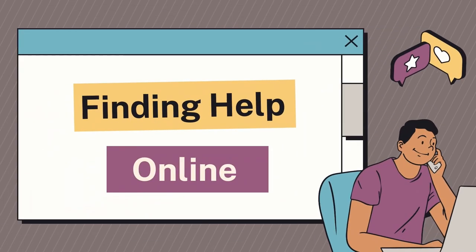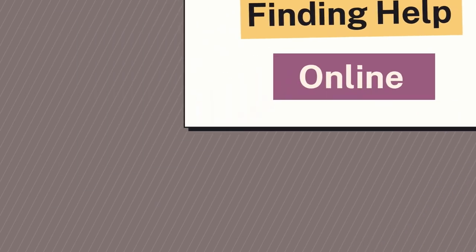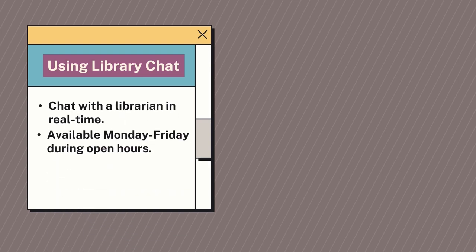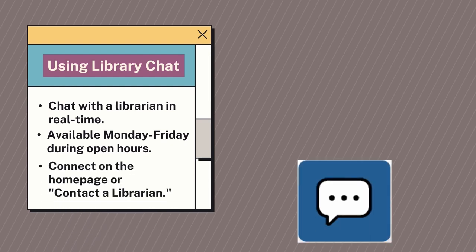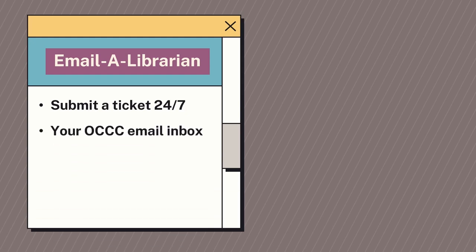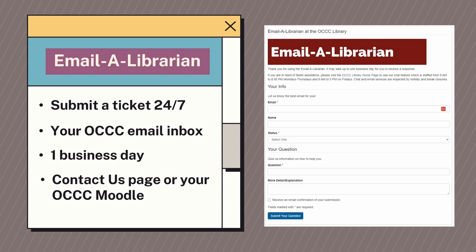Sometimes research can be daunting. Let's talk about how to get help online when you need it. Using the library chat feature on the library's website, you can talk to a librarian in real time Monday through Friday when the library is open. You can connect with us either on the library homepage or wherever you see the chat bubble. If you don't have time to chat, you can always use the email librarian form — submit a ticket at any time and have a response sent to your OCCC email inbox. You can expect to hear from us within one business day, though holidays and breaks may slow our response time. You can find the form on our contact us page or linked within your Moodle course.